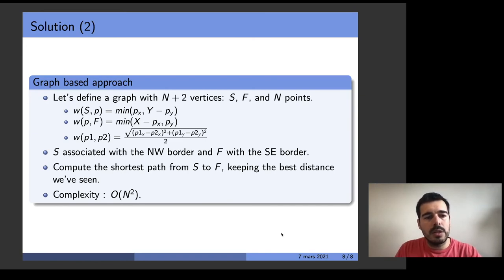So we can associate s with the northwest border, defining the distance between s and each people as the distance between this point and this border. And similarly between each point and f, associating f with the southeast border. And the weight between two points is half their distance because this would be the radius of the circles.